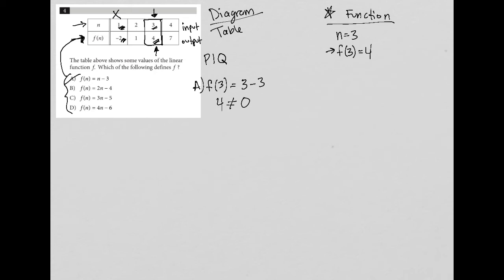Answer choice B, I'll try the exact same thing. So f of three equals two times three minus four. Again, I know that f of three is four, four equals six minus four, which is not true. Four does not equal two. So now I try answer choice C. So B is gone.